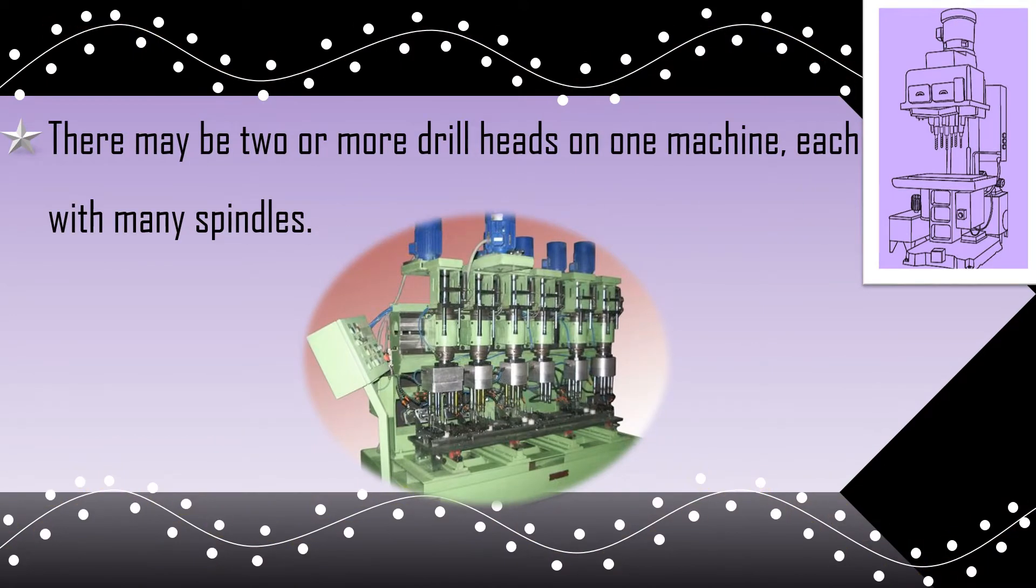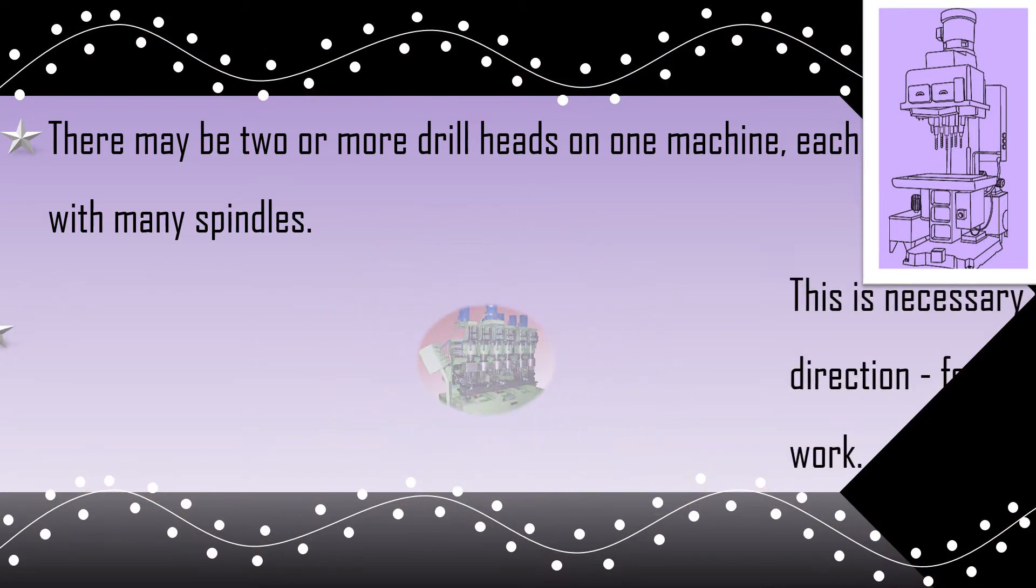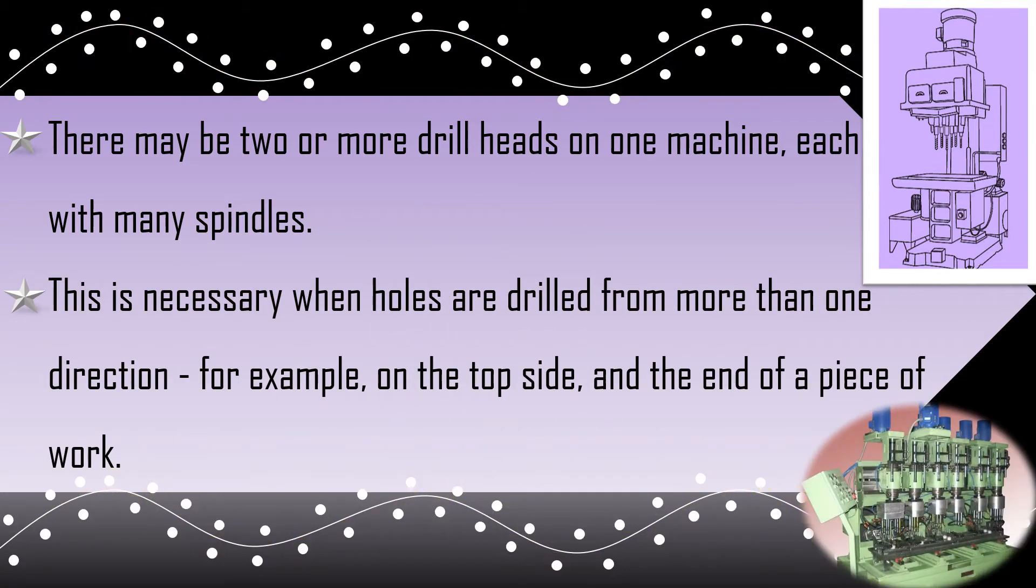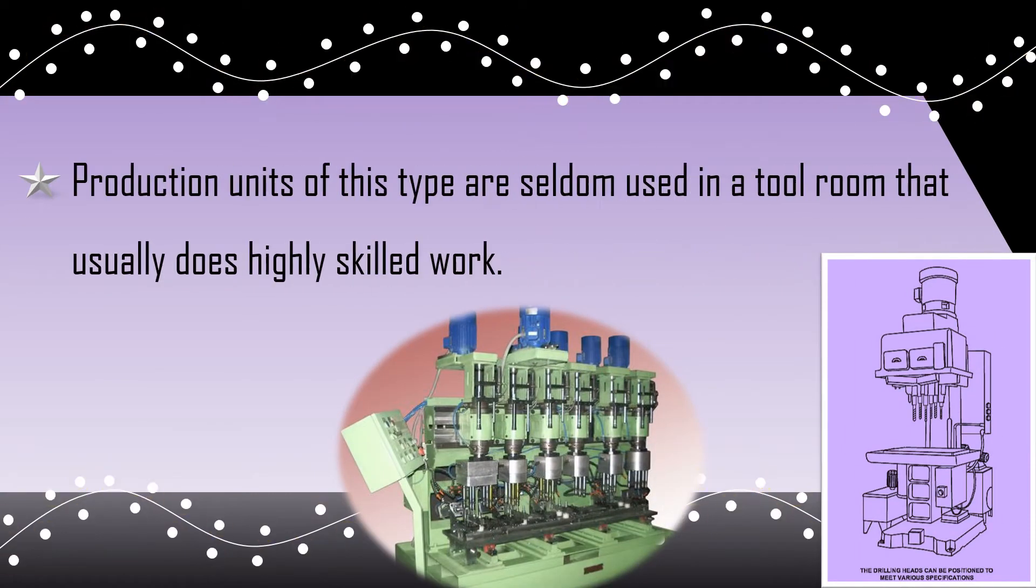There may be two or more drill heads on one machine, each with many spindles. This is necessary when holes are drilled from more than one direction, for example, on the top side and the end of a piece of work. Production units of this type are seldom used in a tool room that usually does highly skilled work.